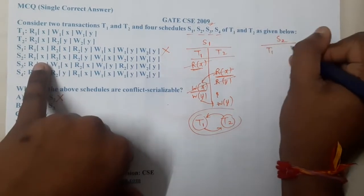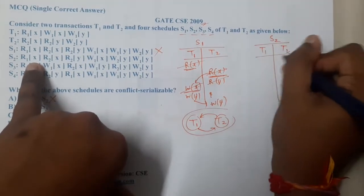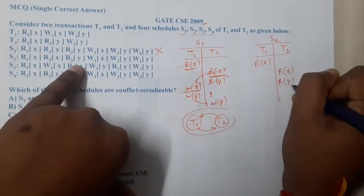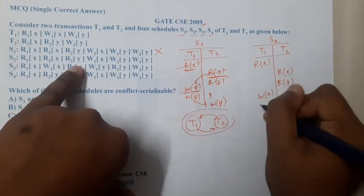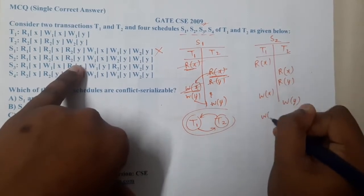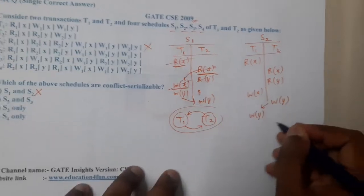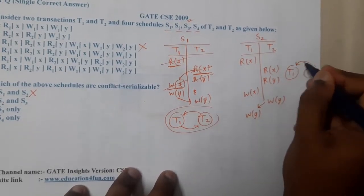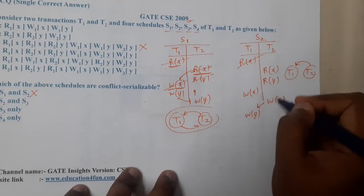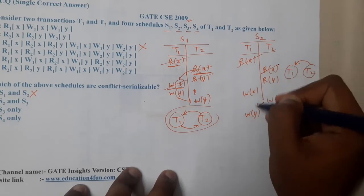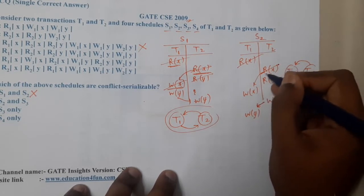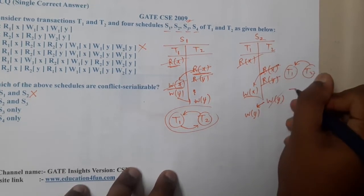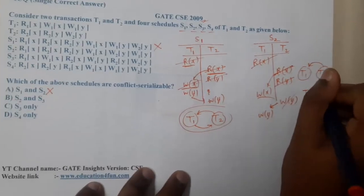Moving on to S2: it also has T1 and T2. The operations include Read(X), Read(X), Read(Y), Write(X), Write(Y), Write(Y). Analyzing conflicts, there is an edge from T2 to T1. No other conflicting edges were found. The only arrow gives serializability order T2 then T1, so S2 is conflict serializable.